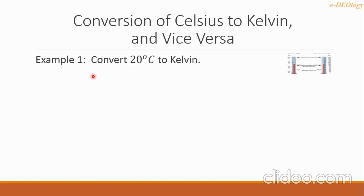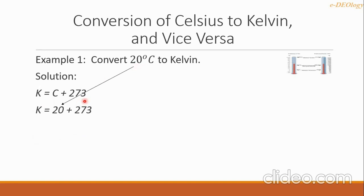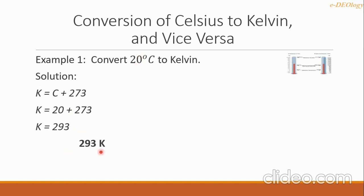Example: convert 20 degrees Celsius to Kelvin. We have the formula K equals C plus 273. We substitute 20 for C and get the sum 293. So the final answer is 293 Kelvin — 20 degrees Celsius equals 293 Kelvin.